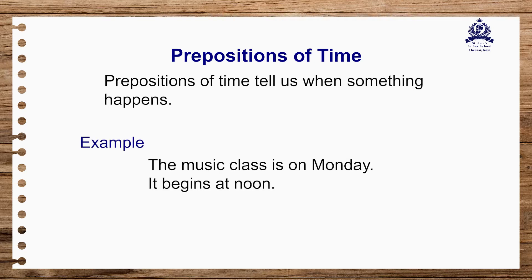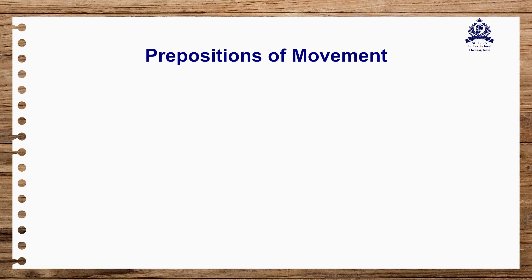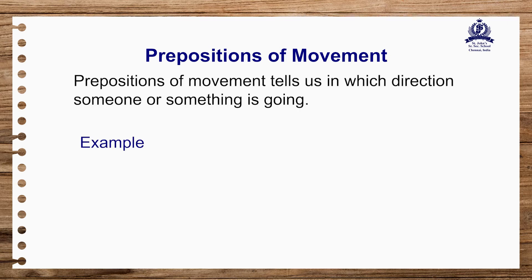Now, what is meant by a preposition of time? Prepositions of time tell us when something happens. For example: 'The music class is on Monday. It begins at noon.' So when is the music class? On Monday. When does it begin? At noon. The prepositions here are 'on' and 'at'.